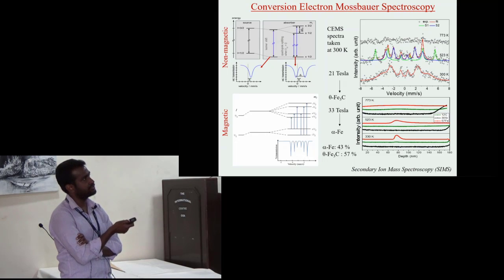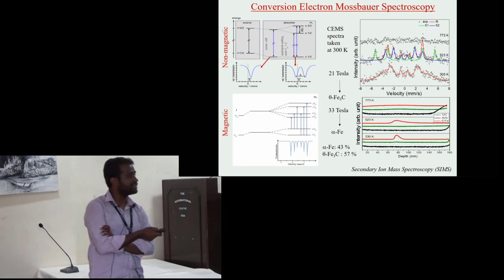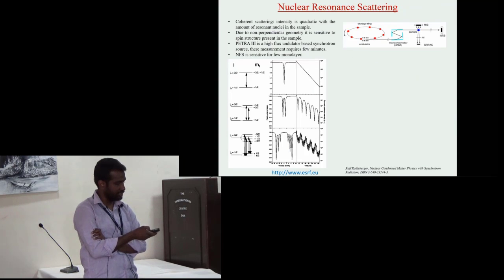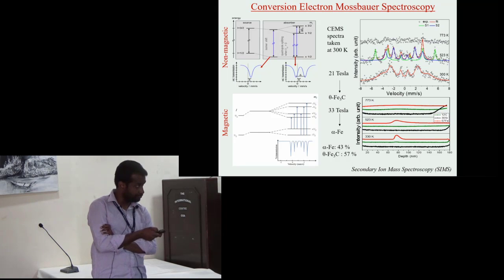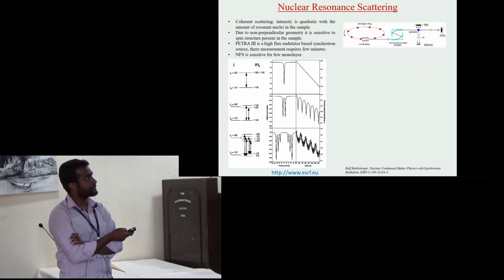Unfortunately we did not find any spectra at this temperature because increasing substrate temperature the effective number of resonating nuclei decreases. That is more clear from SIMS measurement of iron-57 profile. To resolve this problem we carried out nuclear resonance scattering measurement.